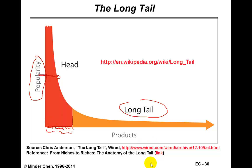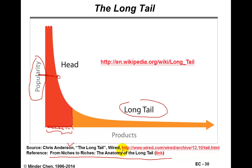The term 'long tail' was coined by Chris Anderson. He wrote an article titled 'Long Tail' in Wired magazine in 2004, and a more academic article — you can find the link here — called 'From Niches to Riches,' which dissects the anatomy of the long tail from an MIT professor. Let's look at the implications of the long tail in the context of e-commerce.